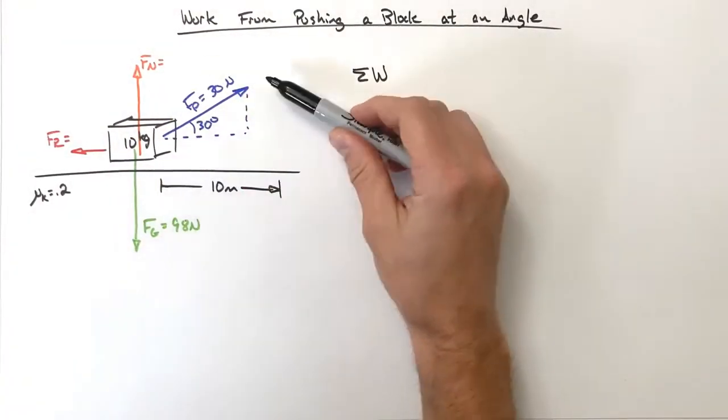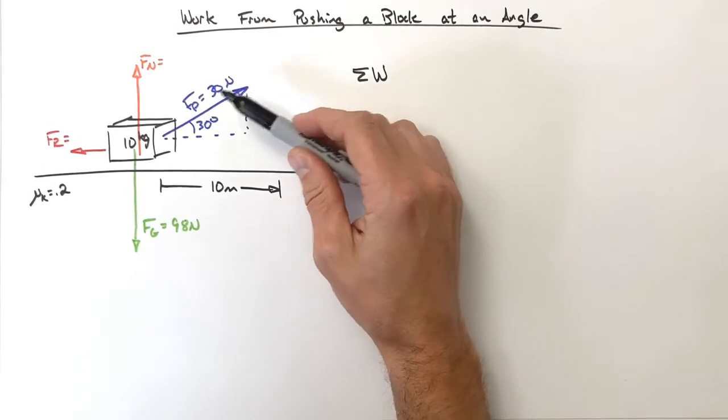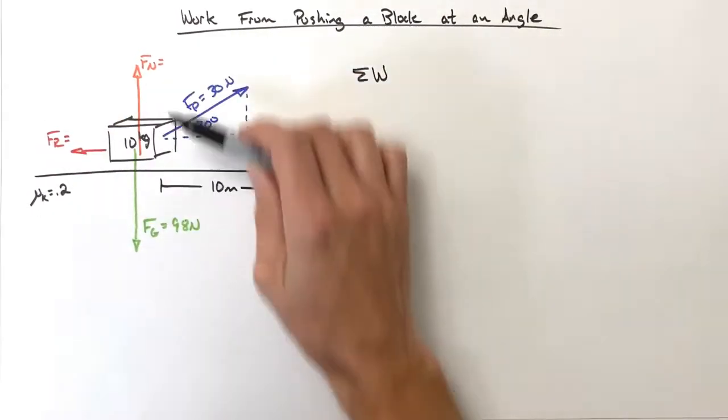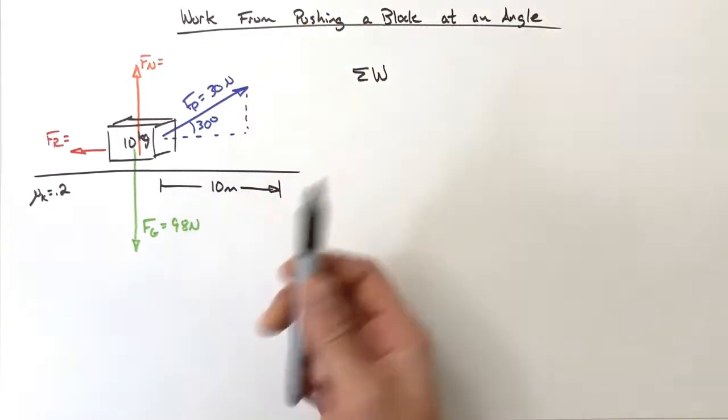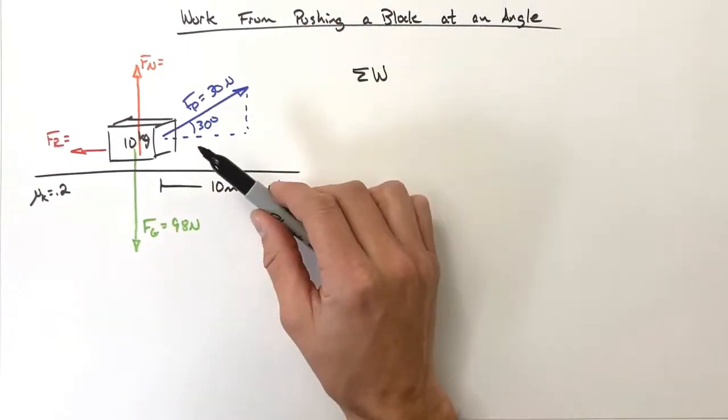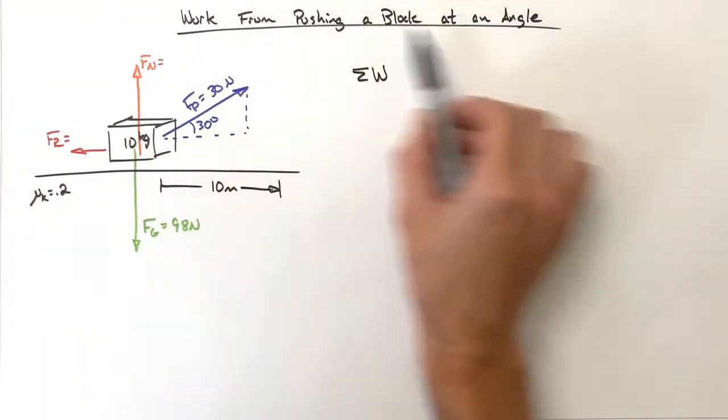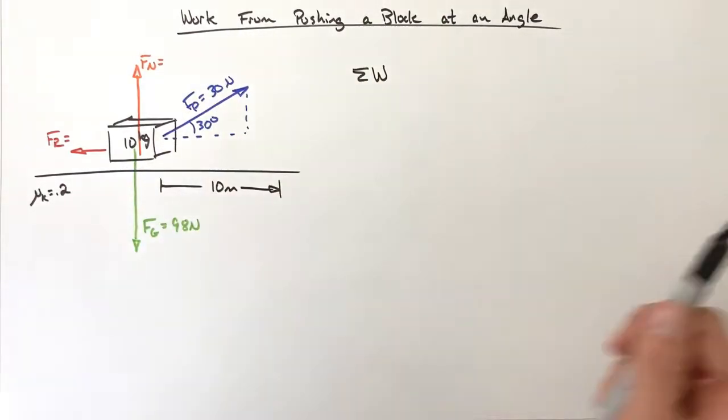Because this force is acting upward at an angle, we're going to have to be a little bit careful in solving for Fn and Fr, because Fn in this case is not equal to Fg. I don't want to get too far into this problem—this is really something dealing with force. Today I'm worrying about work, so we'll just bang through this here.